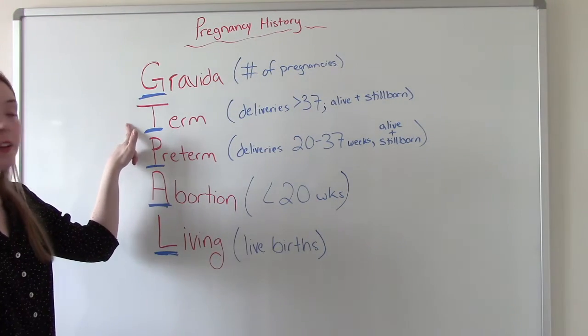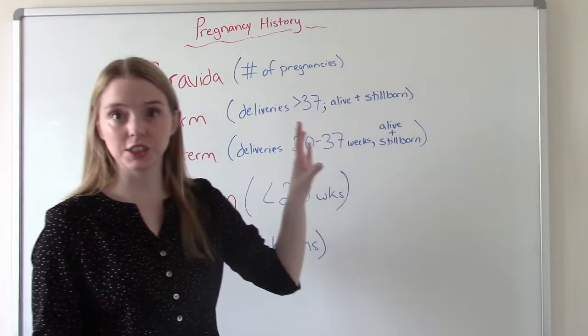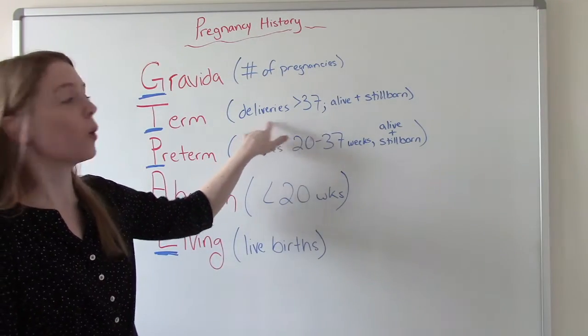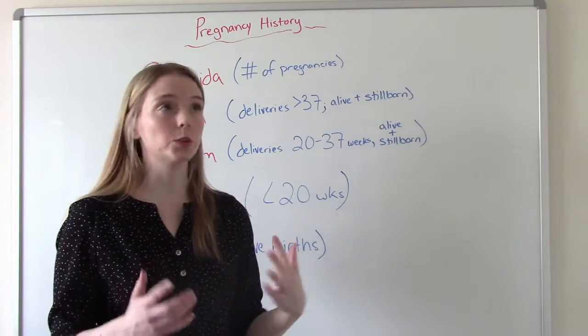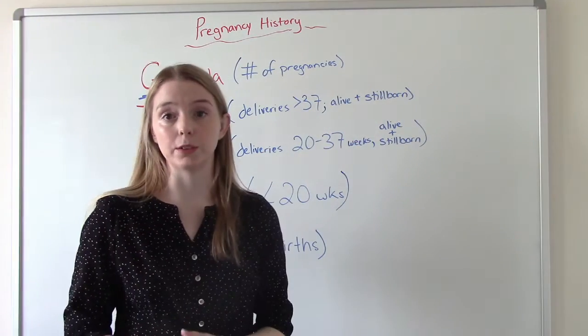T is for term. So out of all of the pregnancies she's had, how many of these deliveries were past 37 weeks? And this includes babies who were born alive and also babies who were born stillborn.